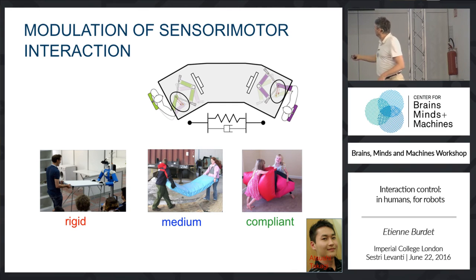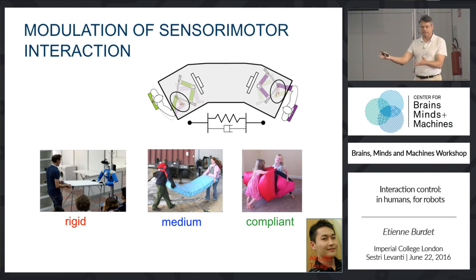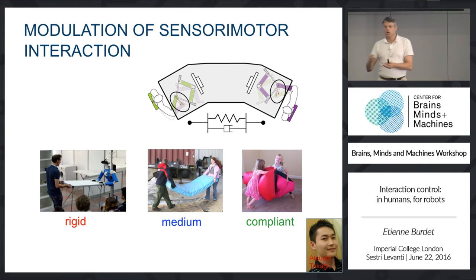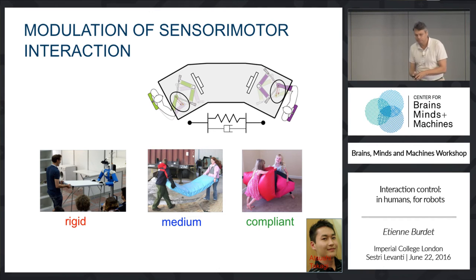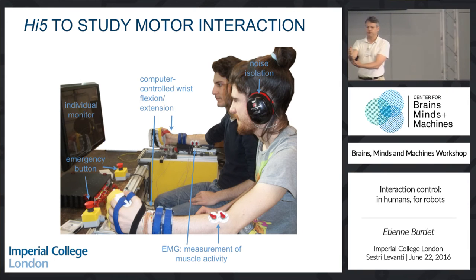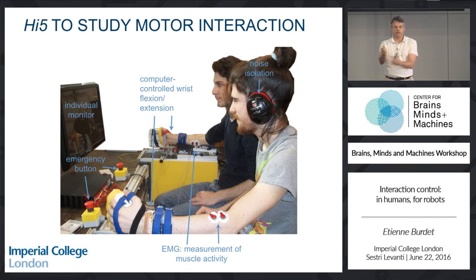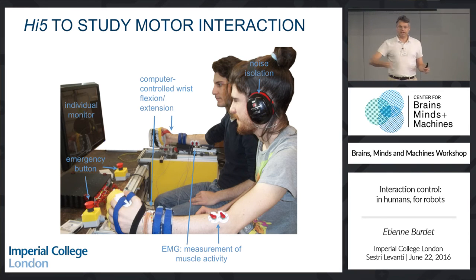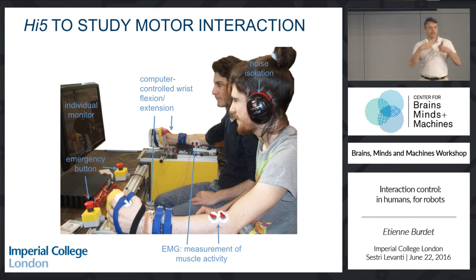To further understand what happens, we did another experiment with either a rigid connection — like with a table — or a compliant connection as before. When it is rigid, you are constrained but get perfect information from the other. When it is compliant, you are free to compensate for errors of the partner, but the information is not perfect. We used a one-degree-of-freedom setup where a motor controls each hand, because we want to measure muscle activation and interpret it in a simple way.